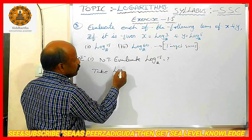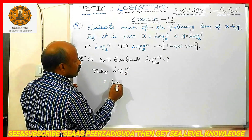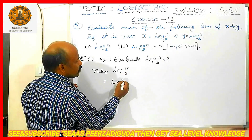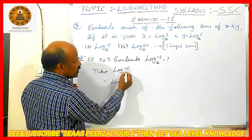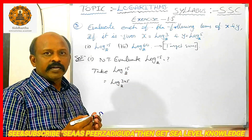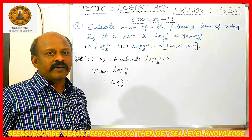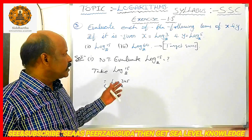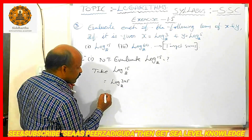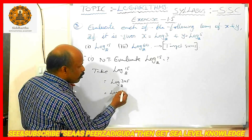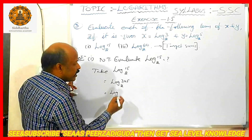Take log 15 base 2. This 15 I am going to write as product of prime factors: 3 into 5. 3 times 5 is 15. It is a very small number, that's why I am going to multiply and write product of prime factors directly. Otherwise you have to do LCM. Again, it is in the form of log(x·y). Log(x·y) form is what? Log x plus log y.